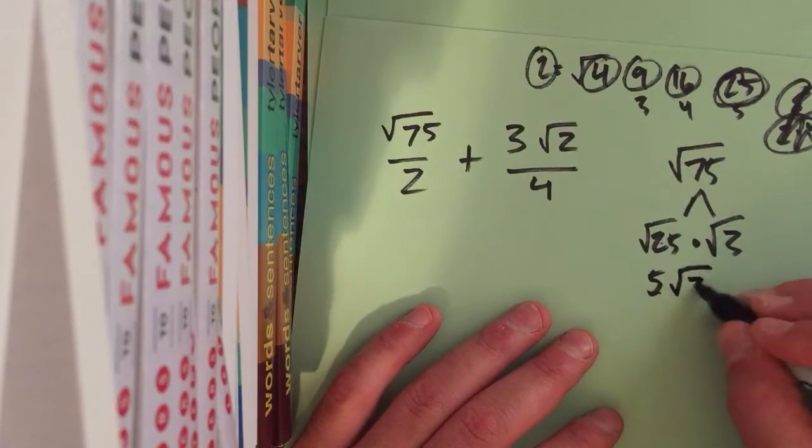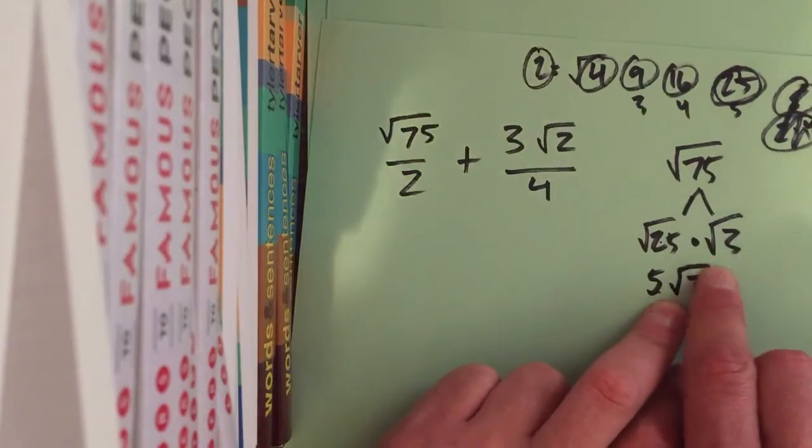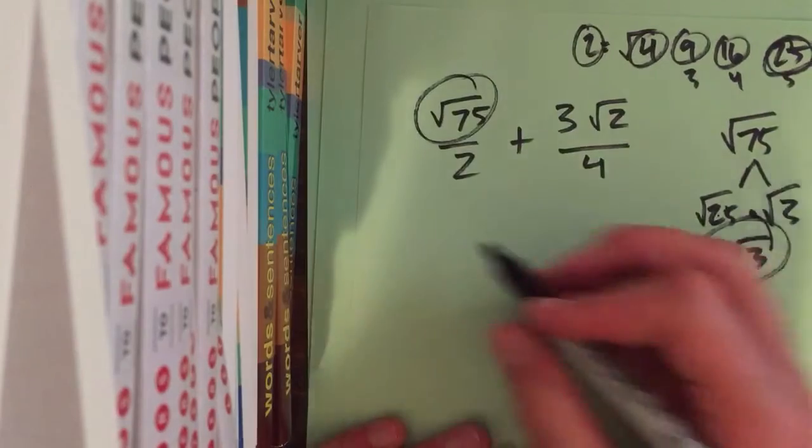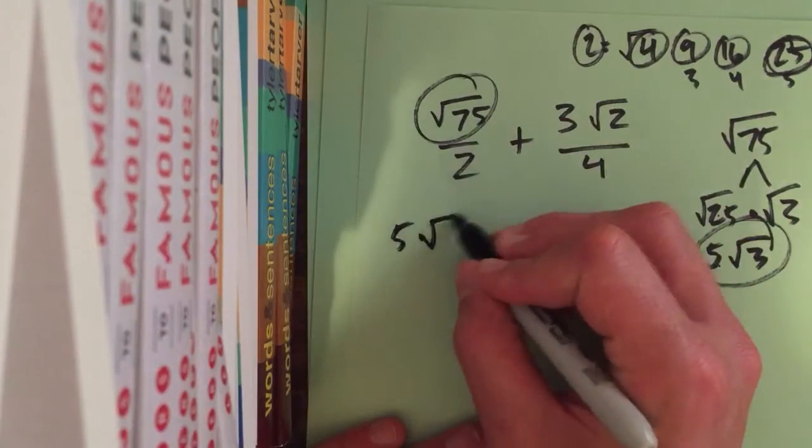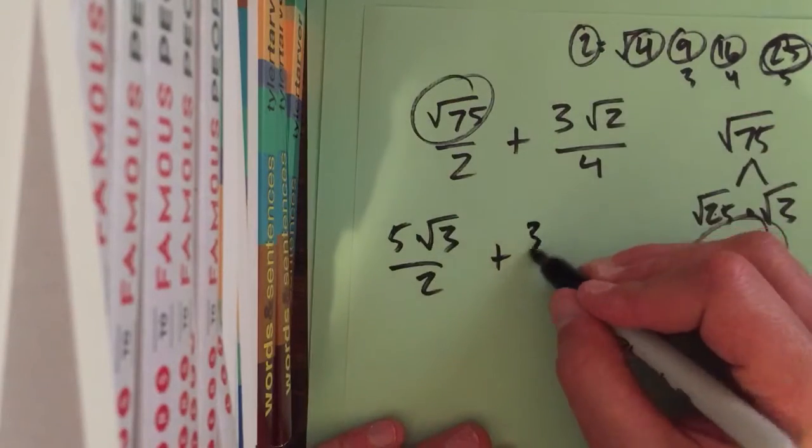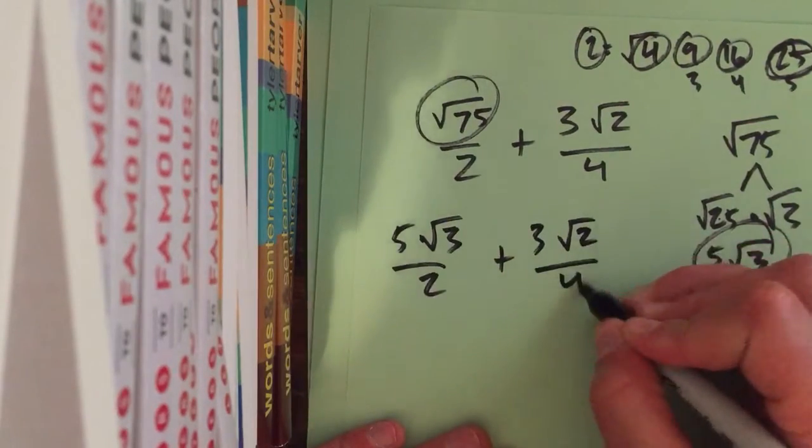And then I've got to bring down my times radical 3, because, well, that did not break out of prison break. So, I'm going to replace this with what I just found. So, it's 5 radical 3 over 2 plus 3 radical 2 over 4.